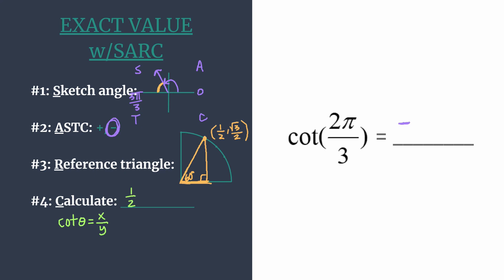So we'll write 1 half. And if we're dividing by a fraction, we're actually multiplying by the reciprocal. So let's go ahead and do that. The reciprocal of root 3 over 2 is just 2 over root 3.